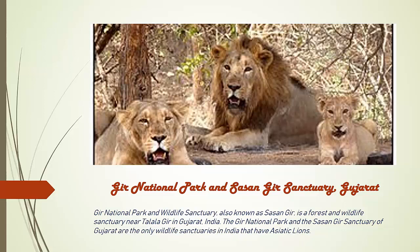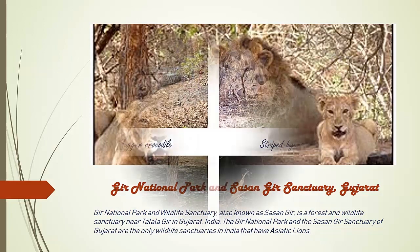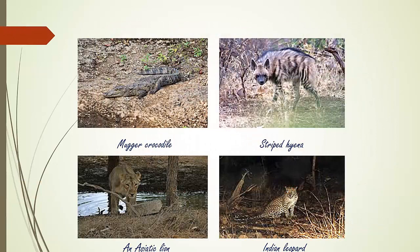Gir National Park and Sasan Gir Sanctuary are found in Gujarat. Examples of wildlife at Gir National Park and Sanctuary include Mugger Crocodile, Striped Hyena, Asiatic Lion, and Indian Leopard.